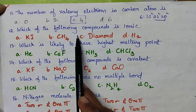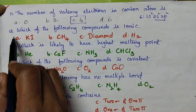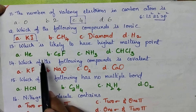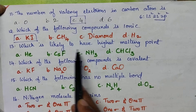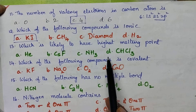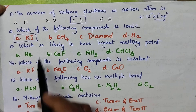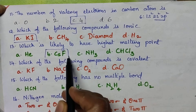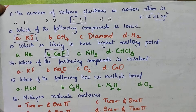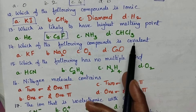Which of the following compounds is ionic? Potassium iodide is ionic. Which is likely to have the highest melting point? Generally ionic compounds exhibit the highest melting point. Among the given options, cesium fluoride is the ionic compound, so it exhibits the highest melting point.